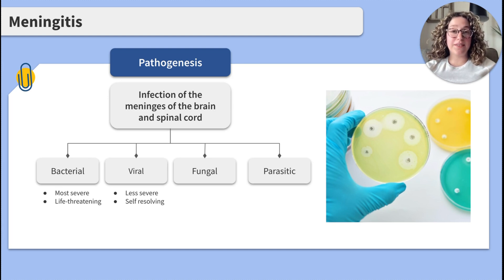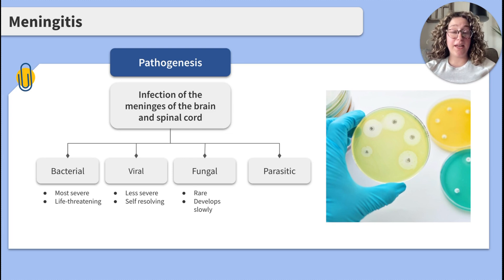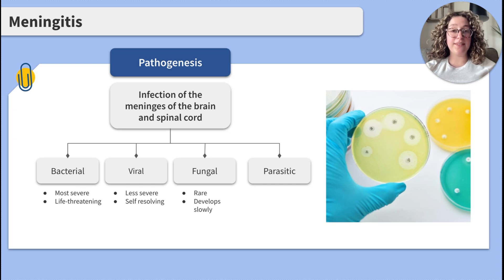Moving on to the less common types of meningitis: fungal and parasitic. Fungal meningitis is rare but can be serious, often developing slowly and requiring a prolonged course of treatment with antifungal medications. Parasitic meningitis is caused by parasites and is rare, but it can be severe and even fatal in some cases.